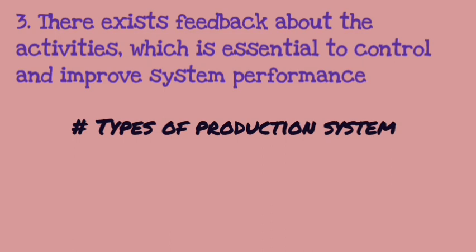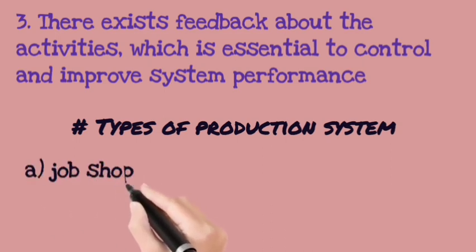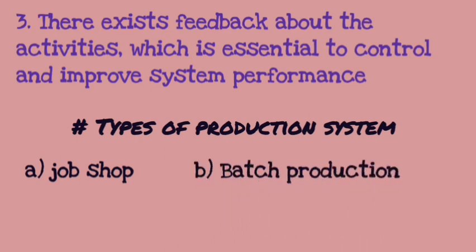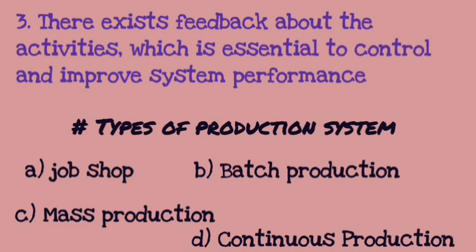The production system has four types. First is the job shop production system. Second is the batch production system. Third is mass production. Fourth is continuous production. We will explain each one by one.